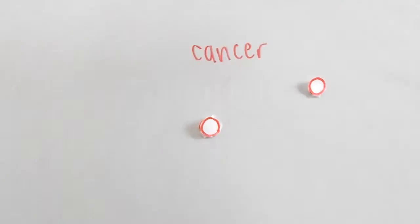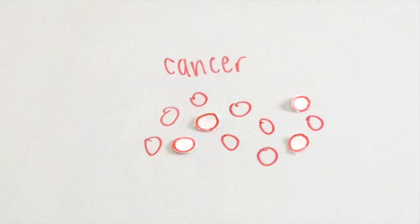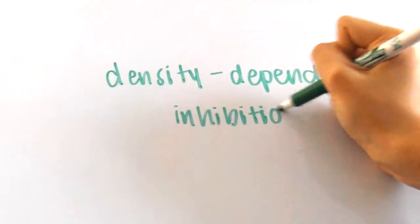Cancer cells are cells with uncontrollable cell division. They pay no attention to the cell checkpoints and don't stop dividing. They don't exhibit this characteristic that normal cells have, called density-dependent inhibition.